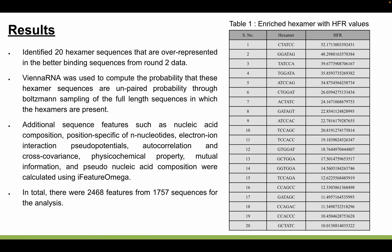The 20 identified hexamer sequences are listed here along with their HFR values. In total, we had 2,468 features for the analysis.